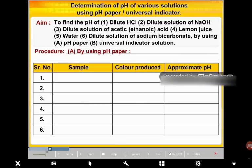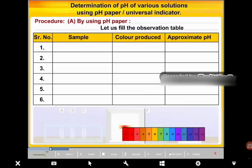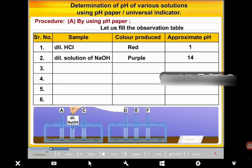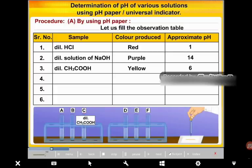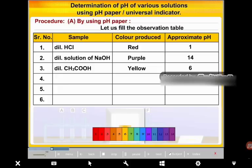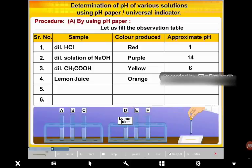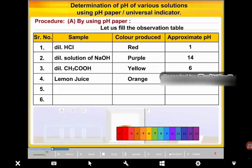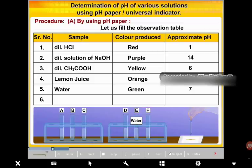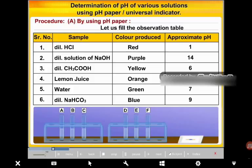Here is the observation table. The samples are: dilute HCl, dilute solution of NaOH, dilute solution of acetic (ethanoic) acid, lemon juice, water, and dilute solution of NaHCO₃. Let us fill in the pH values observed for each sample.